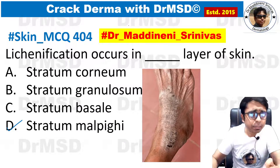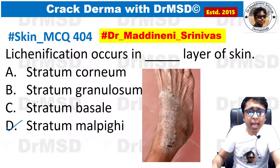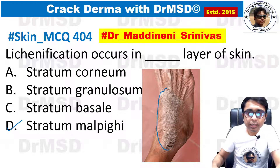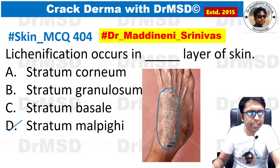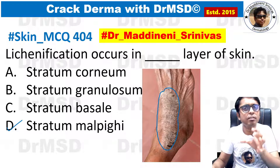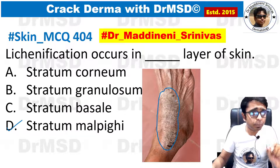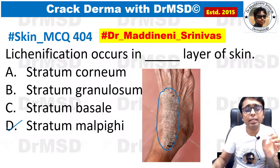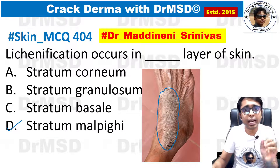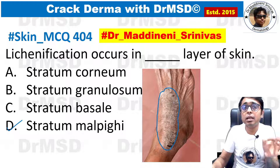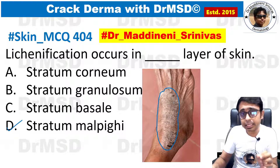Lichenification is basically — as you can see here over the ankle — a hyperpigmented skin lesion which, if you try to palpate it, will be very thick in nature, and there are increased skin markings seen.